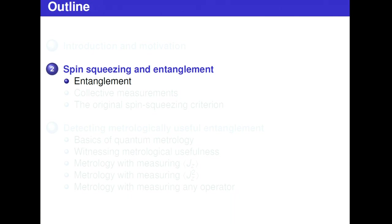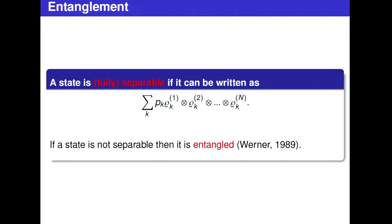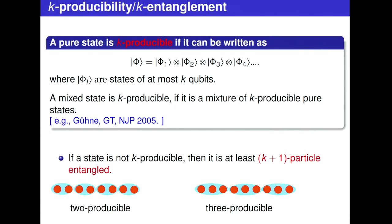Let's see first what entanglement is. Simply, a state is separable if it can be written as a mixture of product states. And if a state cannot be written like this, then it is entangled. The definition is very simple. But the problem is that if you have one million particles and two of them are entangled, then the entire one-million-particle state is entangled. So we have to find some other definitions.